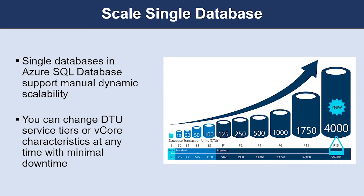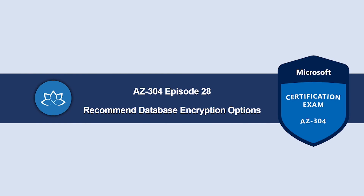Single databases in Azure SQL Database support manual dynamic scalability but not auto-scale. For a more automatic experience, consider using elastic pools, which allow databases to share resources in a pool based on individual database needs. With a single database you can use either DTU or vCore models to define the maximum amount of resources assigned to each database, while elastic pools let you define a maximum resource limit per group of databases in the pool. That concludes this episode — next we'll learn about recommending a database encryption option.